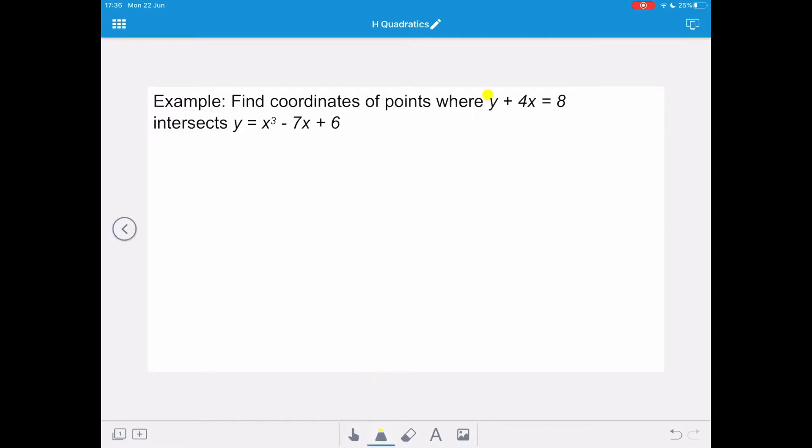In order to equate these graphs, they both need to be in terms of y. So we're going to need to rearrange our line in terms of y, and we're going to get y equals negative 4x plus 8. And now we can equate the line and the curve to each other. That's going to give us x cubed minus 7x plus 6 equals negative 4x plus 8.